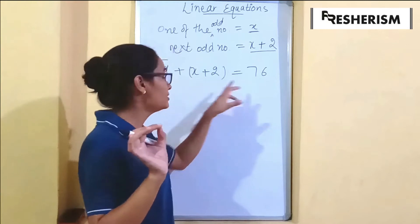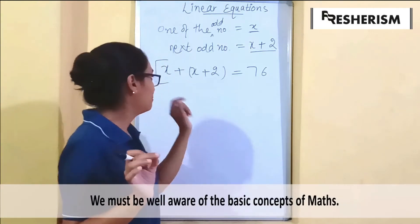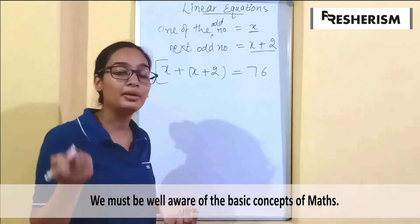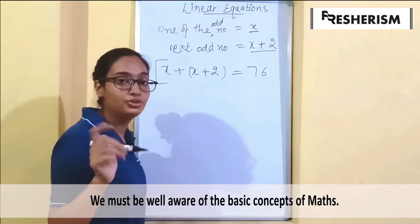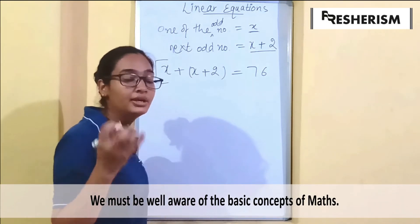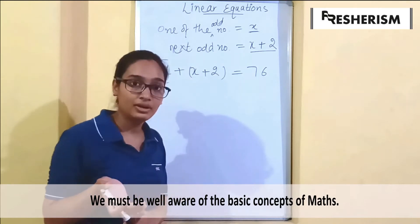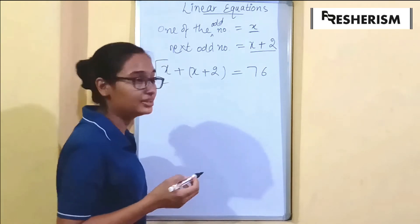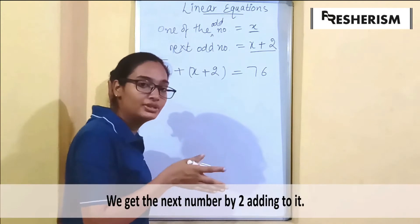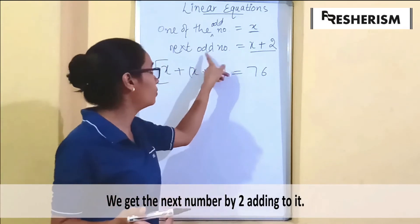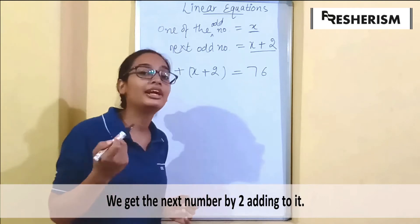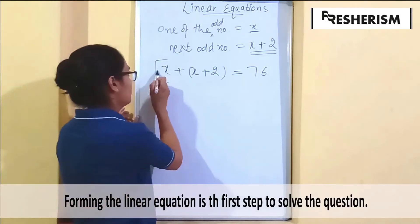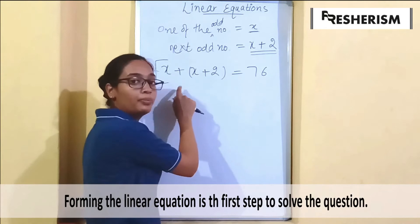This is how we form a linear equation — we use the given information in the question. Just in case you don't know what consecutive numbers are, you would not be able to use that information. So you must go through the basic topics of math: what are odd numbers, even numbers, prime numbers, co-primes, consecutive numbers — consecutive means one after the other.